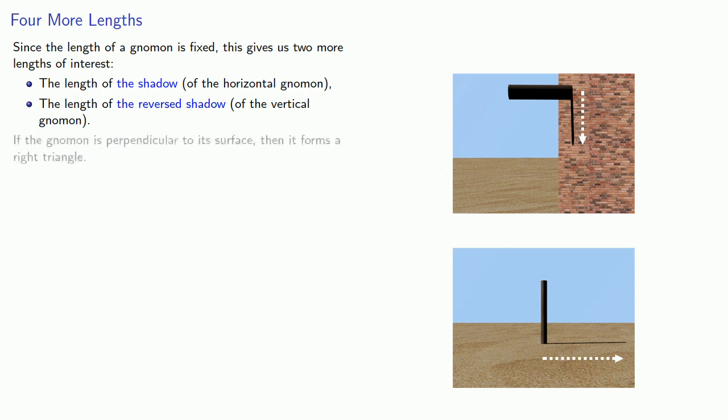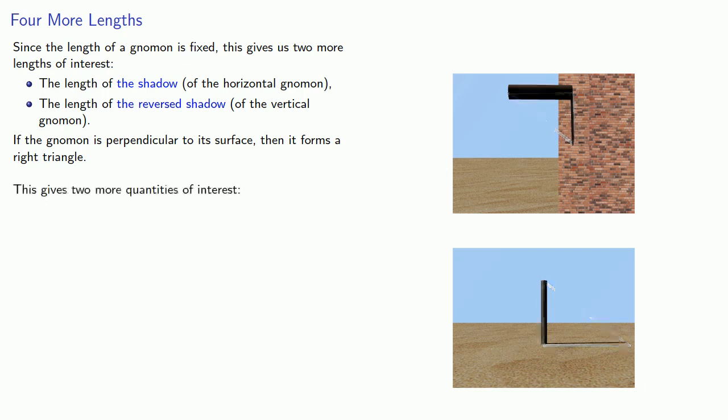Similarly, if the gnomon is perpendicular to a surface, it forms a right triangle. This gives us two more quantities of interest: the hypotenuse of the shadow and the hypotenuse of the reverse shadow.